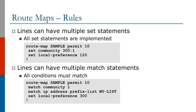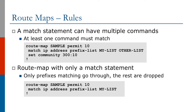Alternatively, you can have multiple match statements — for example, match community 1 and match IP address prefix-list with a given name. In this case, all conditions must match for the local preference to be set to 300. Some match statements can have multiple commands, where at least one must match. For example, route map sample permit 10 matching IP address prefix-list my-list and other-list means: match everything in my-list or everything in other-list, and if matched, set the community to 300:10.